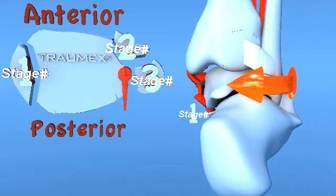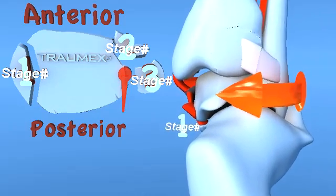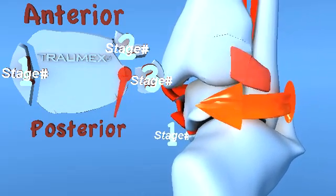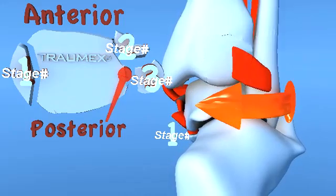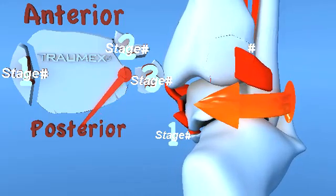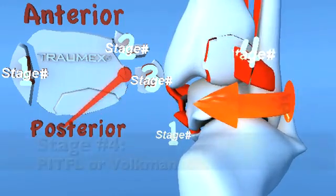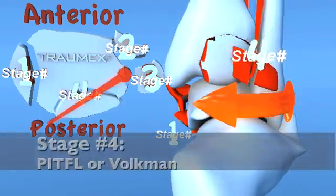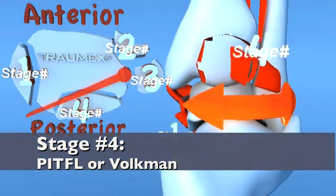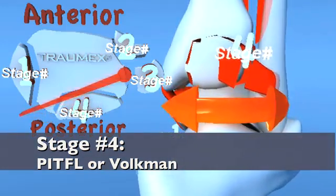If the forces progress into stage 4, either a rupture of the posterior tibial fibular ligament or a fracture of the posterior malleolus, also known as Volkmann's fracture, will occur.